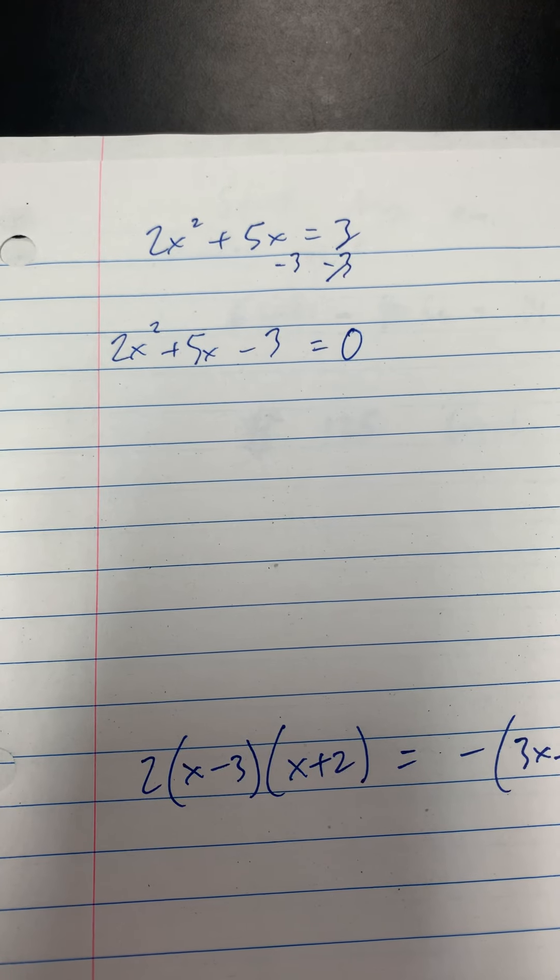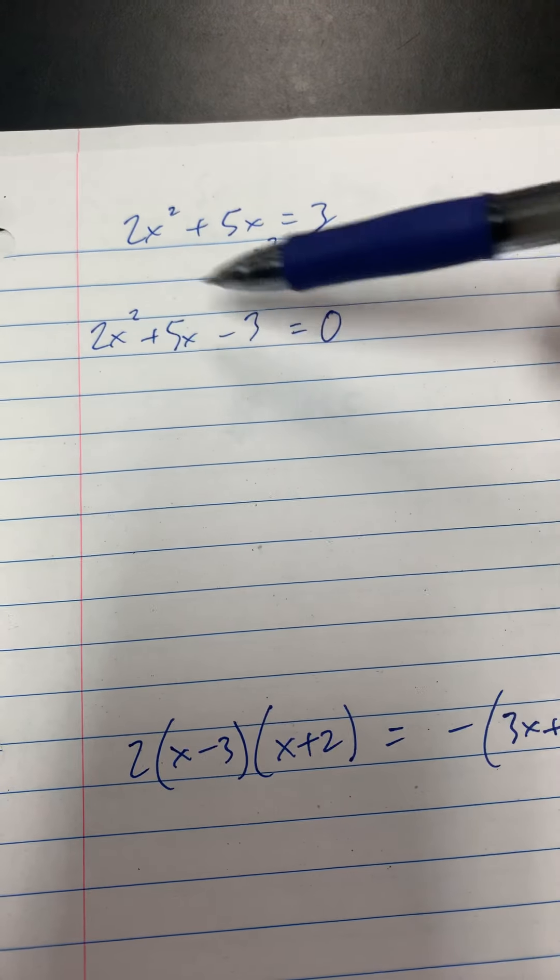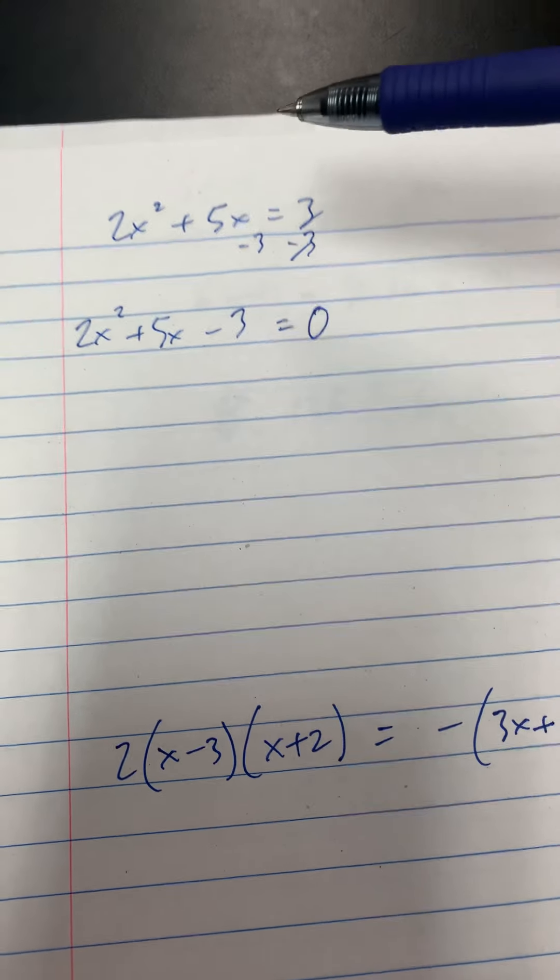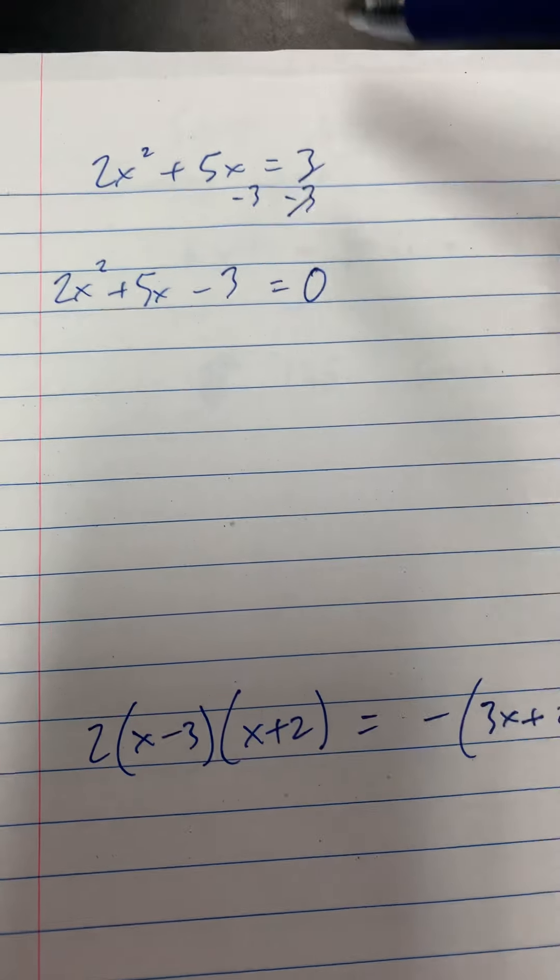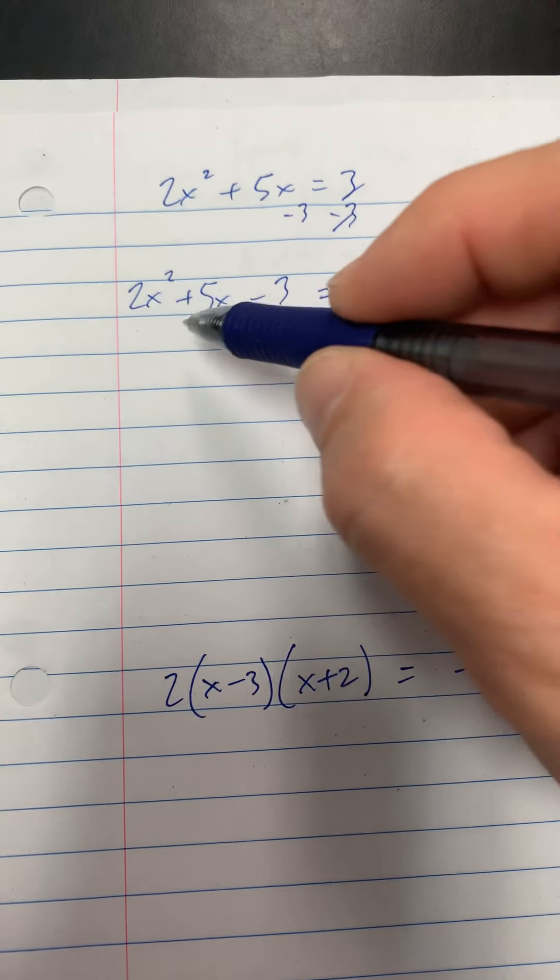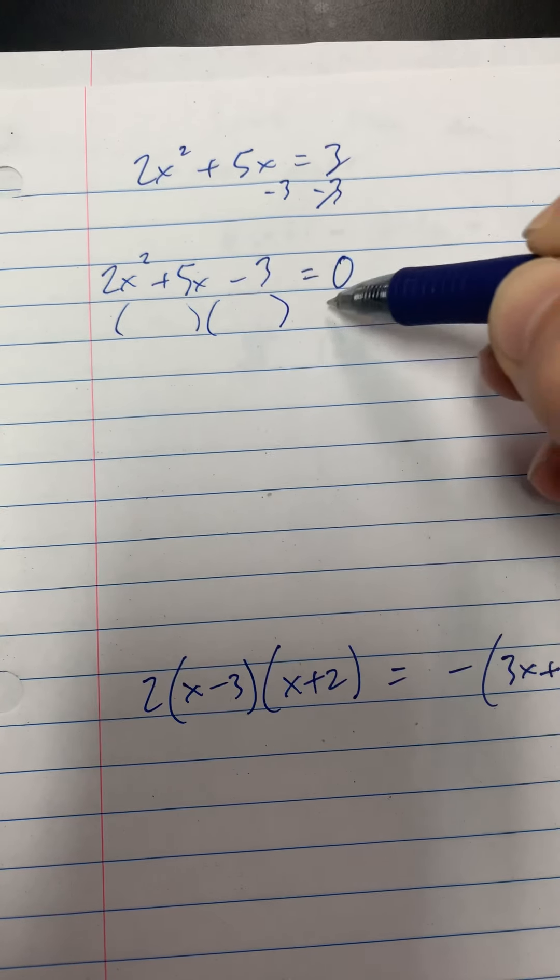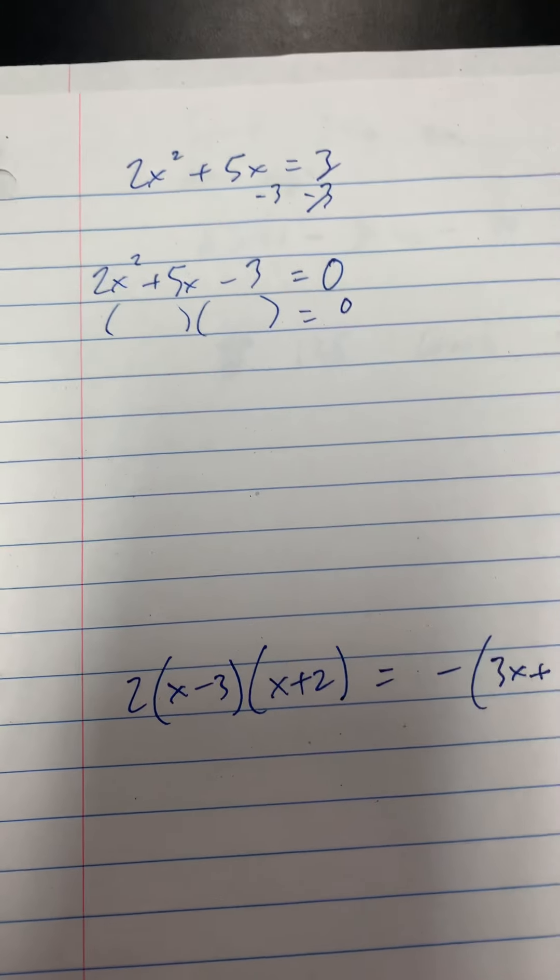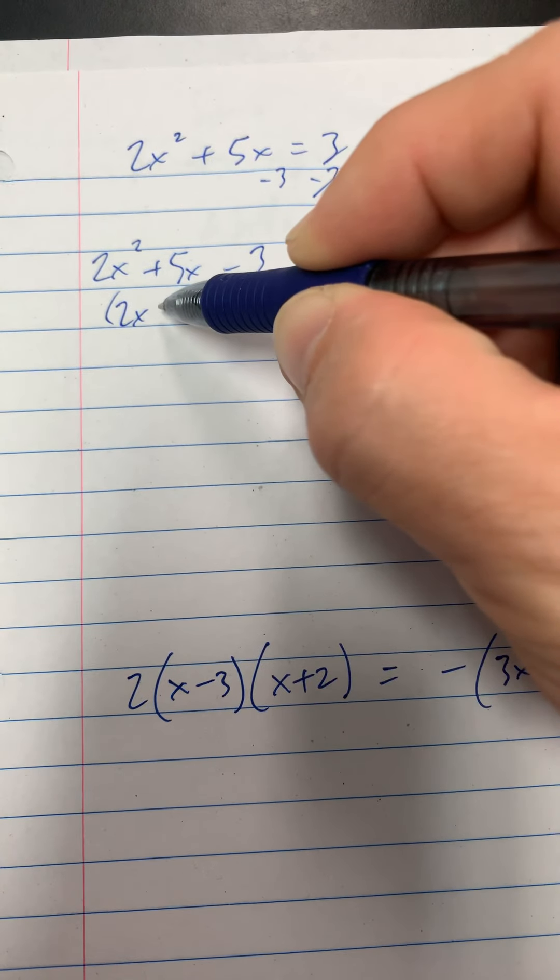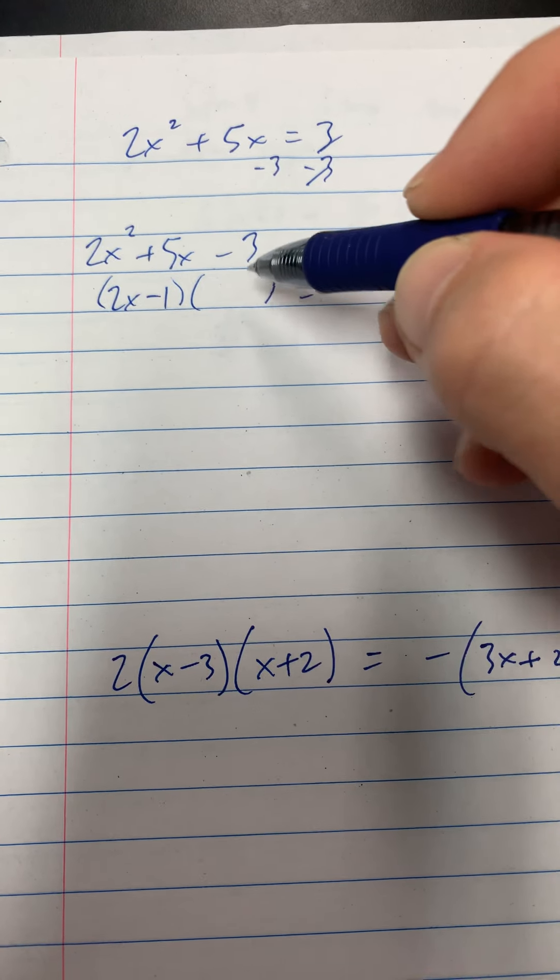That's how we want to start each of these. You want everything set to 0 and you want everything in descending powers of x. And then any term that doesn't have a variable should be at the end. Now we're going to factor this out. We spent a lot of time earlier in the year working on factoring. So this factors down to two binomials and what you end up with is 2x minus 1 times the quantity of x plus 3.